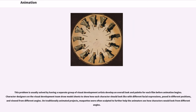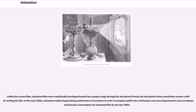Character designers on the visual development team draw model sheets to show how each character should look with different facial expressions, posed in different positions, and viewed from different angles. On traditionally animated projects, maquettes were often sculpted to further help animators see how characters would look from different angles. Unlike live-action films, animated films were traditionally developed beyond the synopsis stage through the storyboard format. In the early 1960s, animation studios began hiring professional screenwriters to write screenplays, and screenplays became commonplace for animated films by the late 1980s.